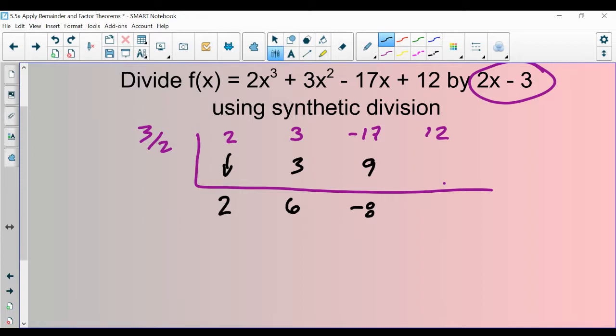Negative 8 times 3 halves, of course you can be using your calculator for this. Negative 8 times 3 halves is negative 12. And 12 plus a negative 12 would be 0.